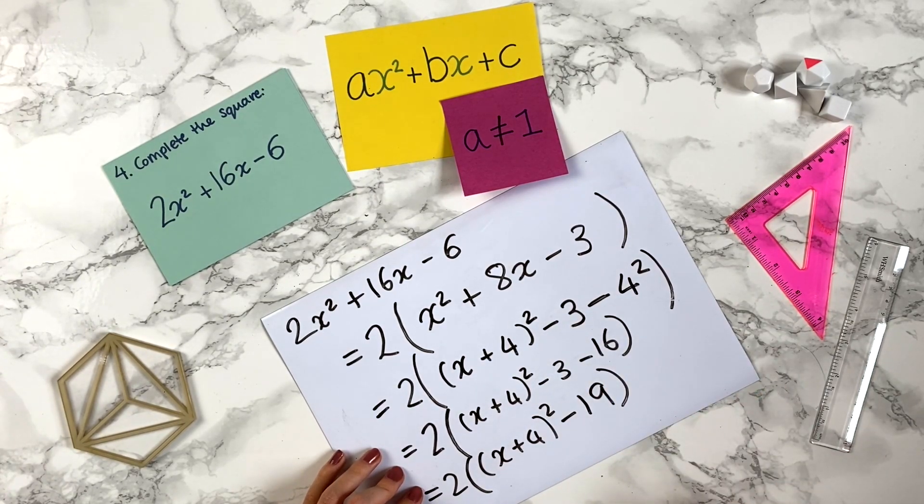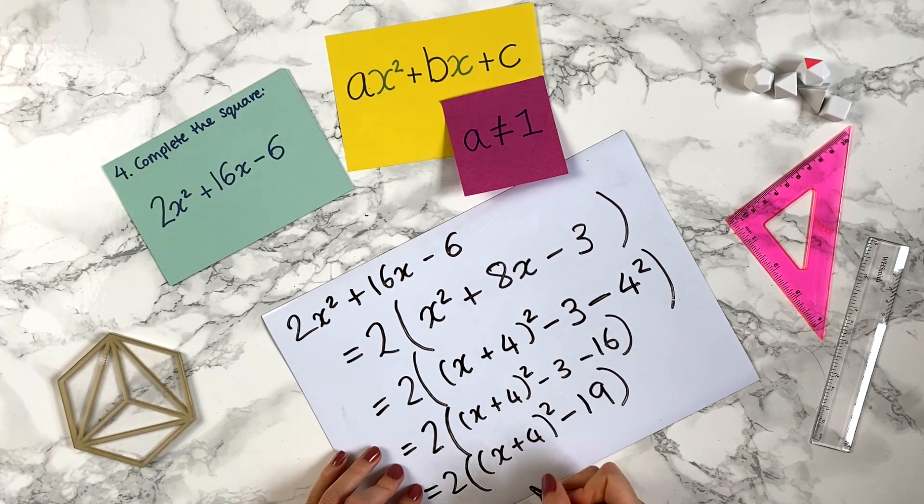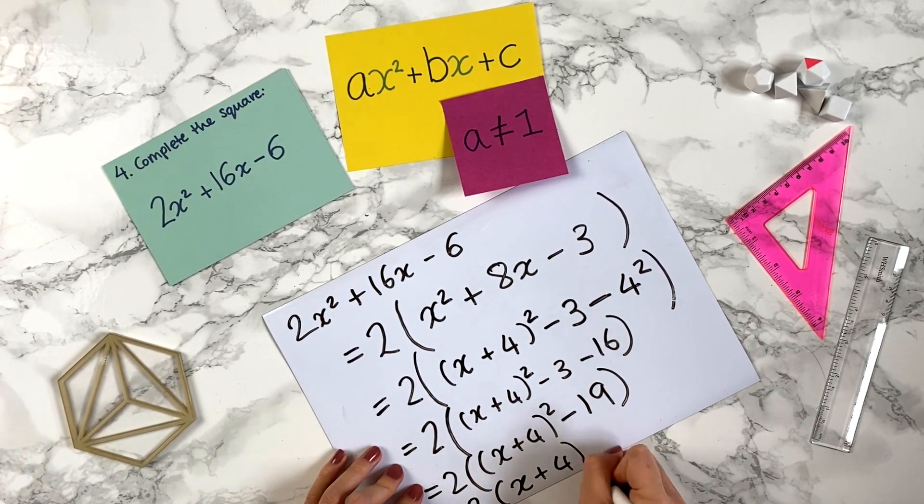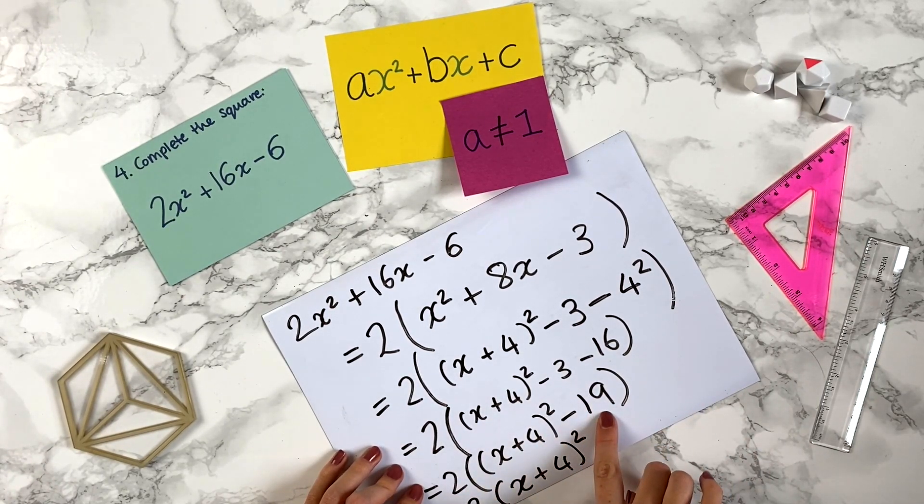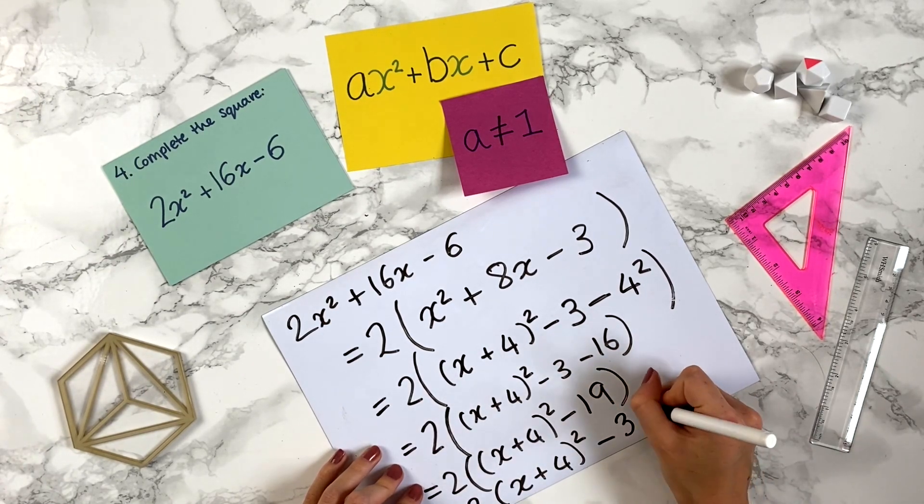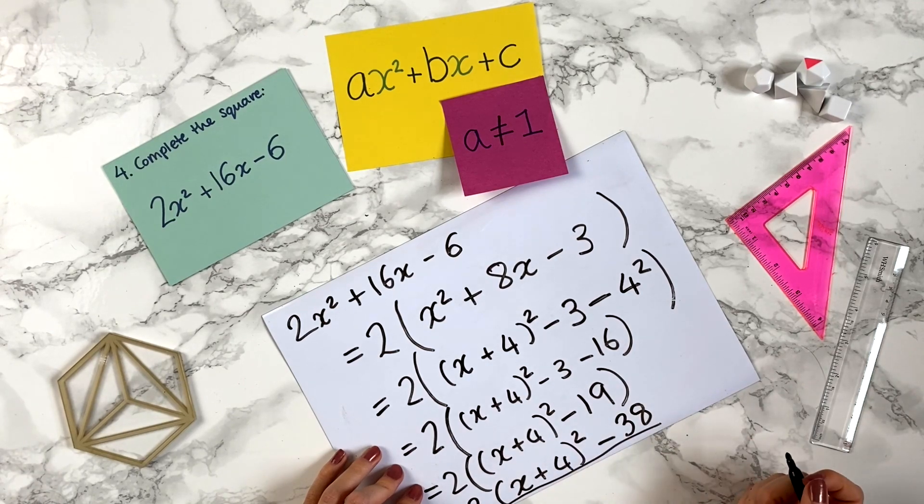x plus 4 and we're almost there but we've got this 2 outside this big bracket so we can now multiply everything by 2 inside the bracket. So we can write that as 2 lots of x plus 4 squared minus 2 times 19 which is 38, so 2 times minus 19 is minus 38. So that is our answer.